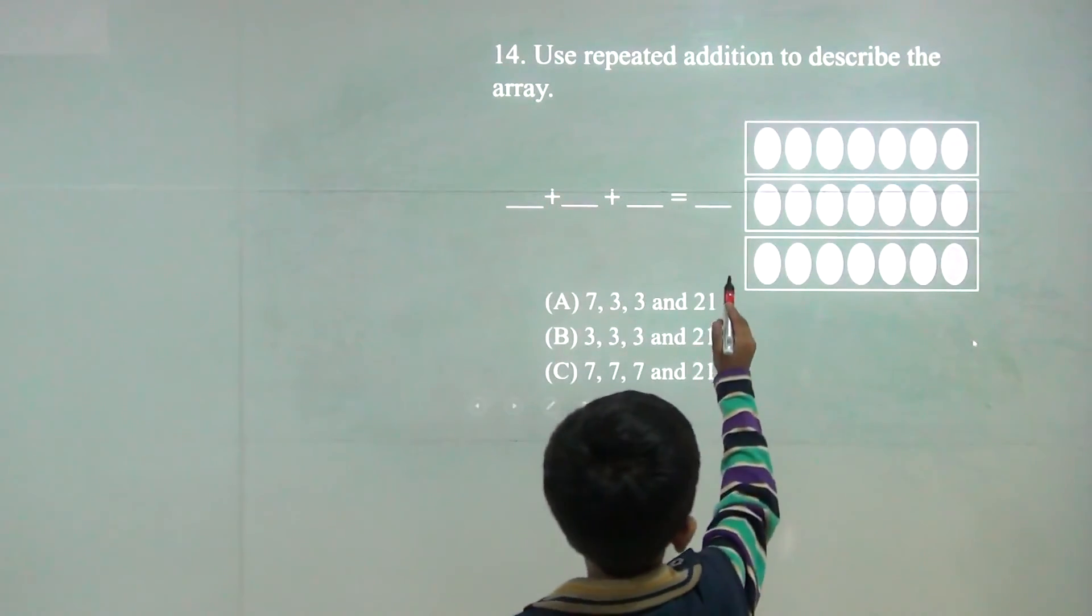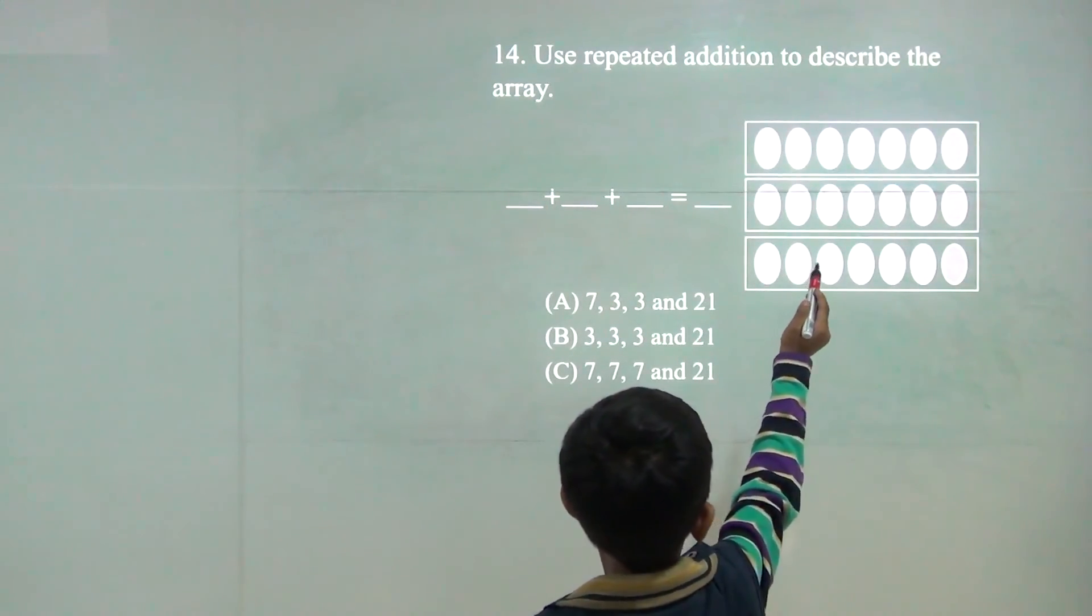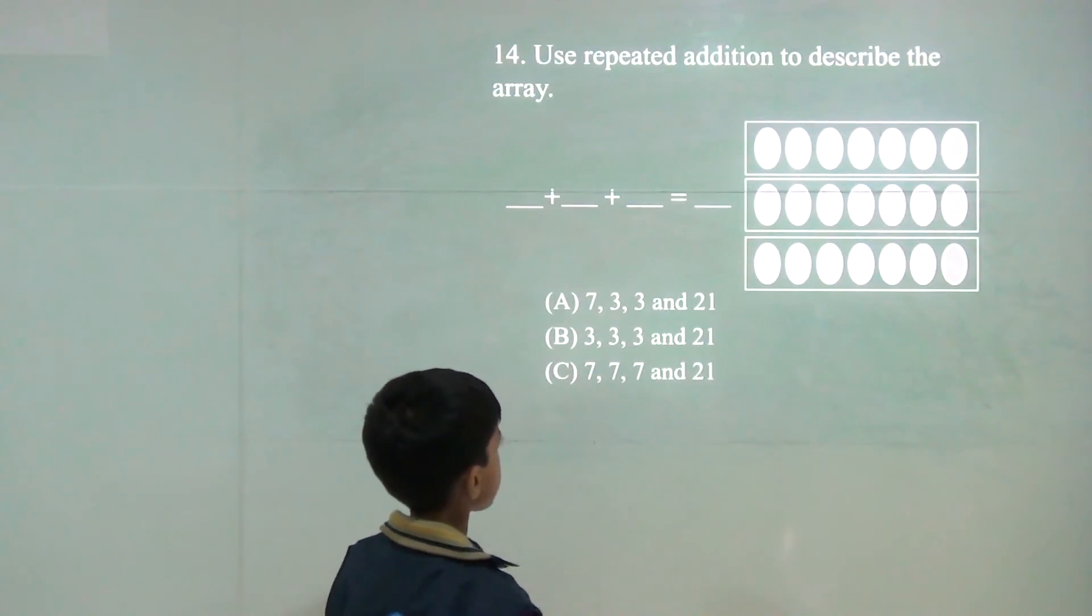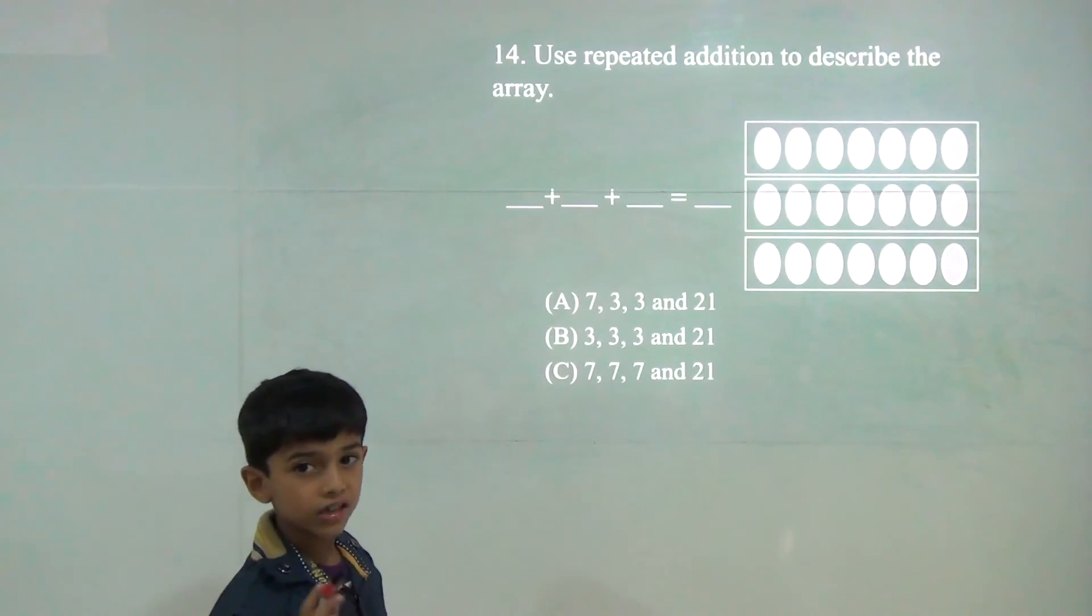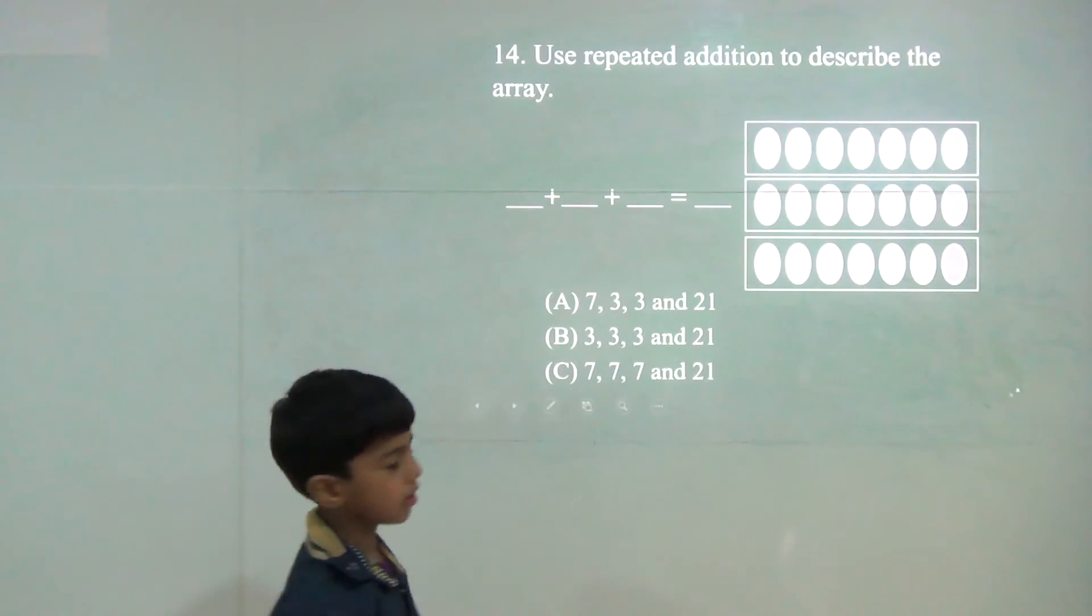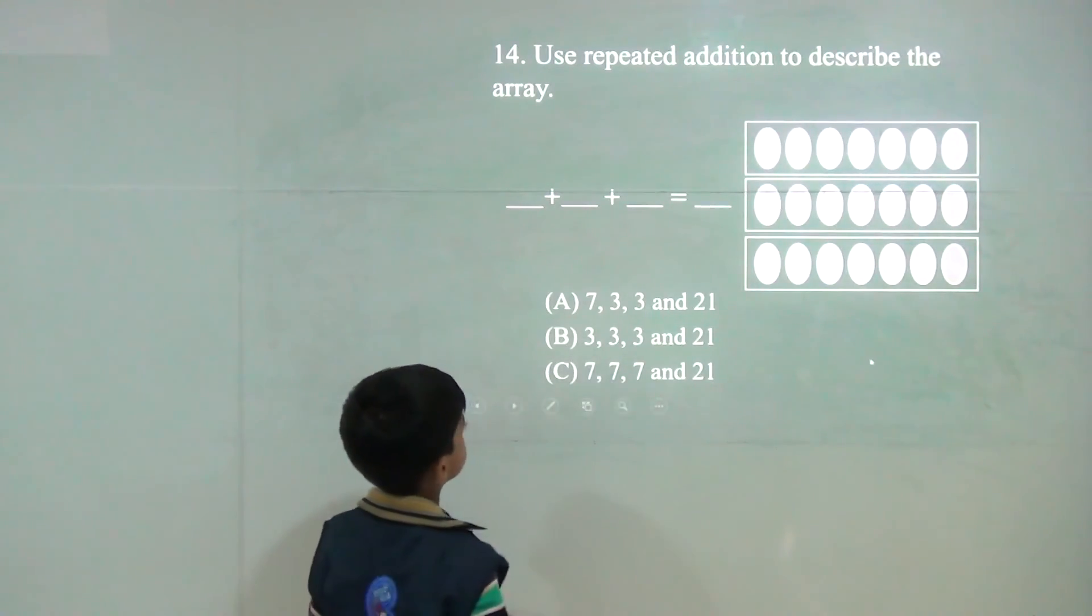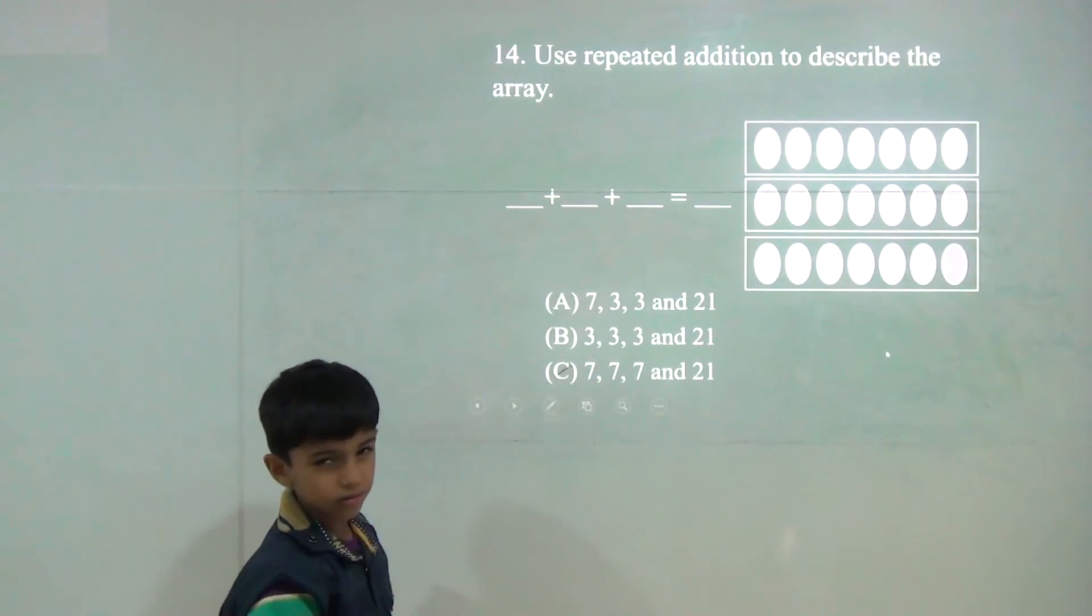Now here we have 1, 2, 3, 4, 5, 6, 7. Now 7 plus 7 plus 7. 7, 3's are 21. So answer would be C.